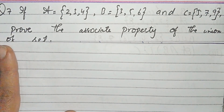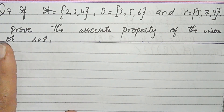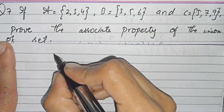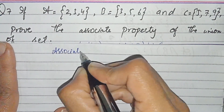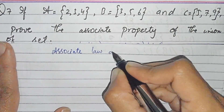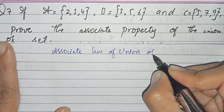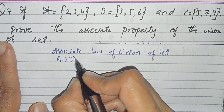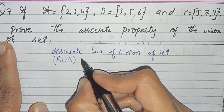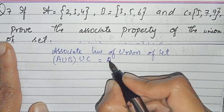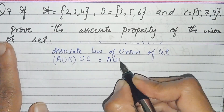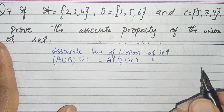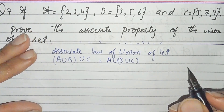Now students, question number 7: if A, B, and C are sets, prove the associative property of the union of the set. The associative law of union of sets is: (A union B) union C is equal to A union (B union C). This is the associative law of union of sets. Now we have to prove it.